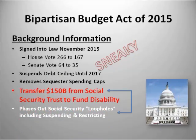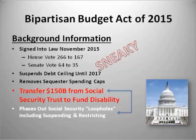Looking at the background of the Bipartisan Budget Act of 2015, I'd use the term 'sneaky' — it was very fast legislation, pushed through quickly. The House voted 266 to 167, the Senate 64 to 35. Among other things, it suspended the debt ceiling until 2017 and removed sequester spending caps — those are part of the debt ceiling scenario.